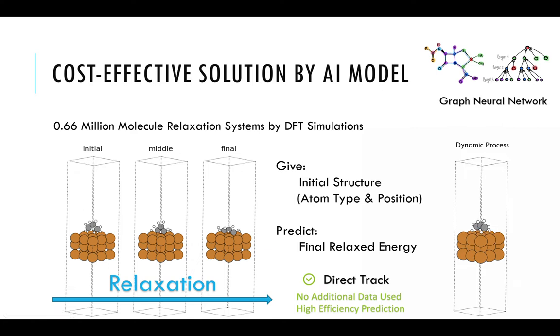At the end, the energy of the adsorbate is low and the structure is stable. For each system, the initial structure is provided, and the goal is to predict the final relaxed energy. There are two tracks. The first one is a direct track, which requires the model takes the initial structure and directly predicts the final energy. And no additional training data could be used. The other one is relaxed track, which predicts the relaxation trajectory step by step, and the inner trajectory data could be used for the training.